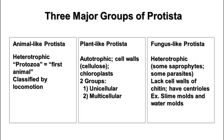There are three major groups of protista. The animal-like protista, which are heterotrophic, are often called protozoa, which means 'first animal,' and they're classified into groups based on how they move and their type of locomotion.